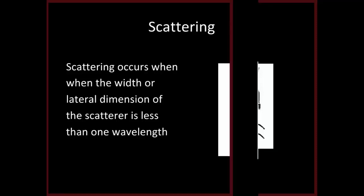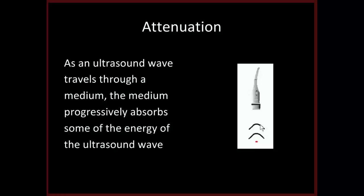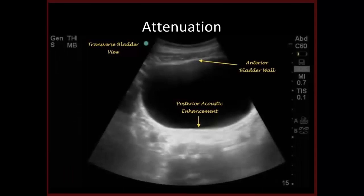Attenuation of ultrasound waves is similar to attenuation in other imaging modalities. As the ultrasound wave passes through a medium, it will progressively absorb some of the wave's energy, so the further it travels, the less of the ultrasound wave actually penetrates through. The ultrasound beam is attenuated in tissues at a rate of about one decibel per centimeter. Attenuation in fluid is much less, and this results in a phenomenon called posterior acoustic enhancement, which you can see distal to fluid-filled structures like the urinary bladder or an ovarian cyst.